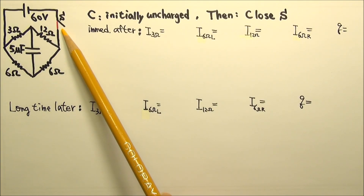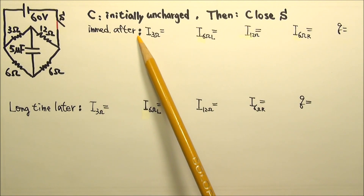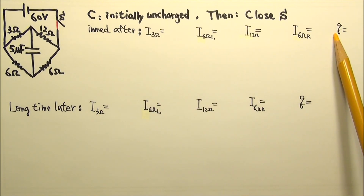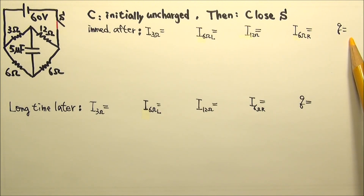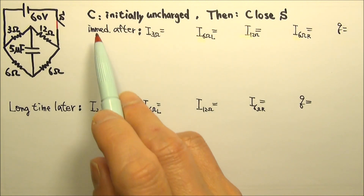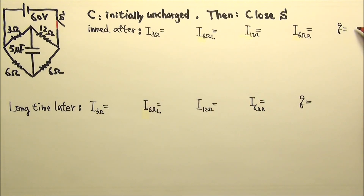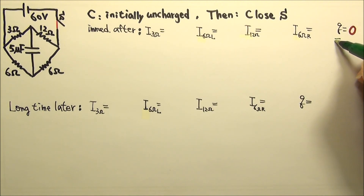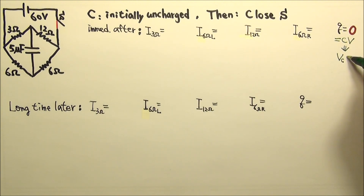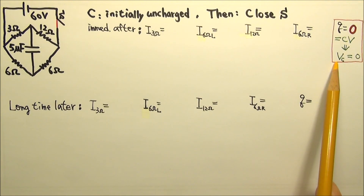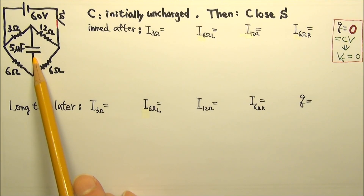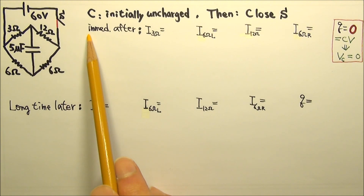When we close the switch, we make a change to the circuit. Immediately after the change is made, the charge on the capacitor is the same as before, because it takes time to change the amount of charge on a capacitor. Since the capacitor is initially uncharged, immediately after the switch is closed, the charge on the capacitor is still zero. And since Q equals CV, Q being zero means the voltage across the capacitor is also zero.